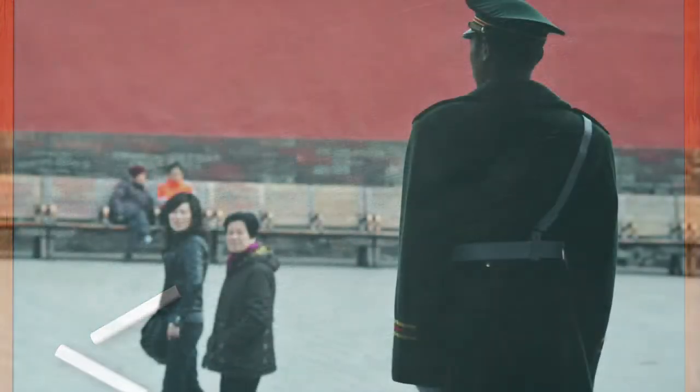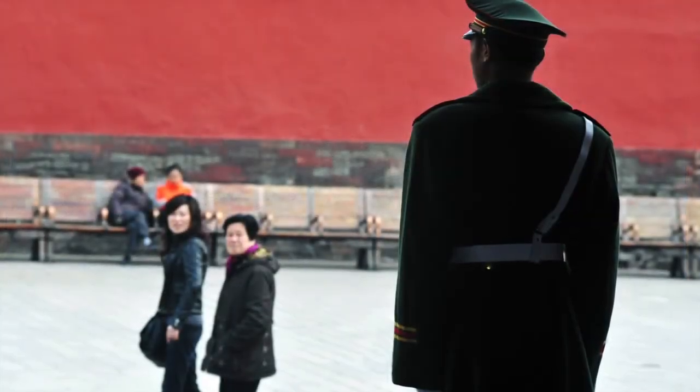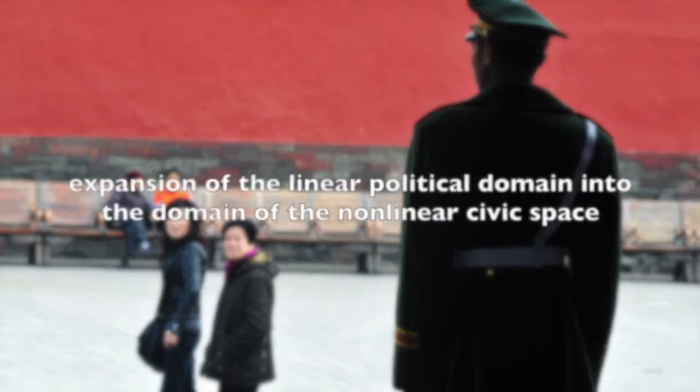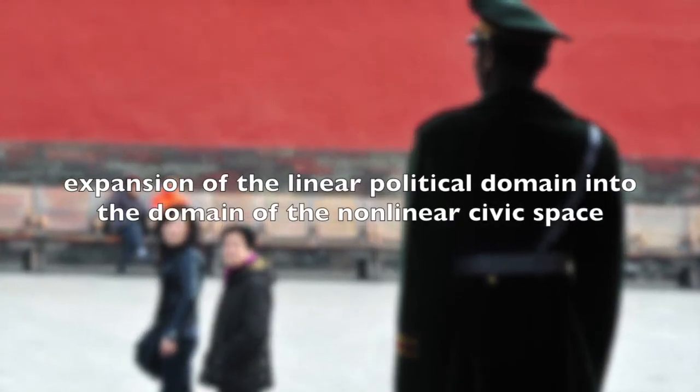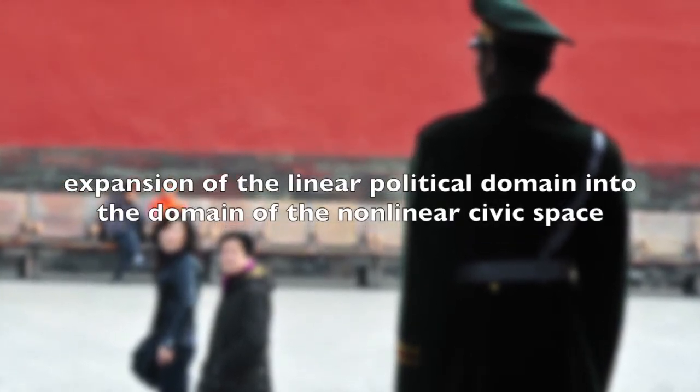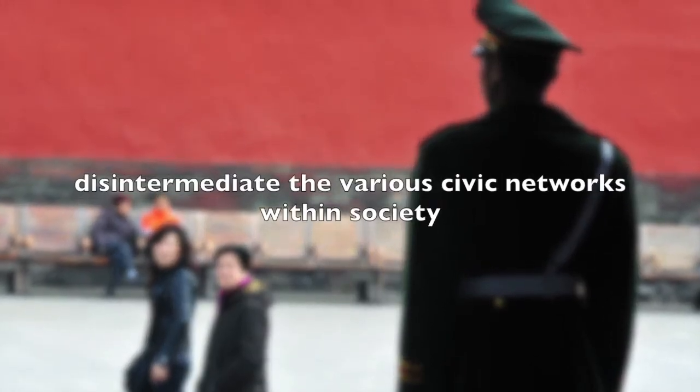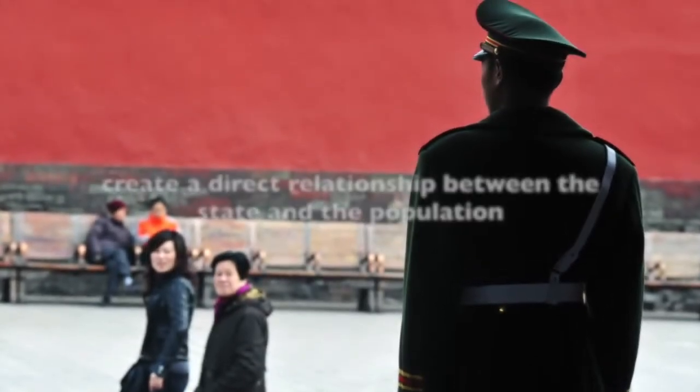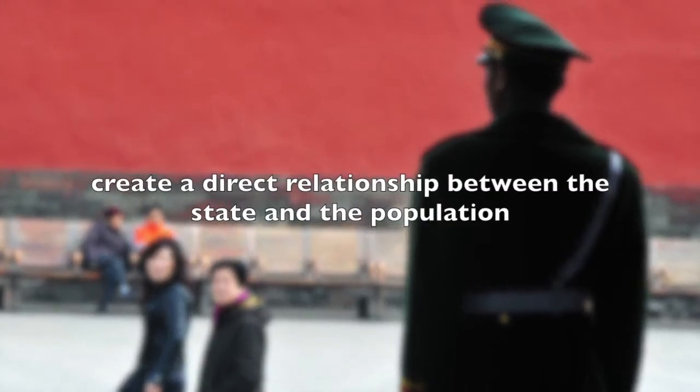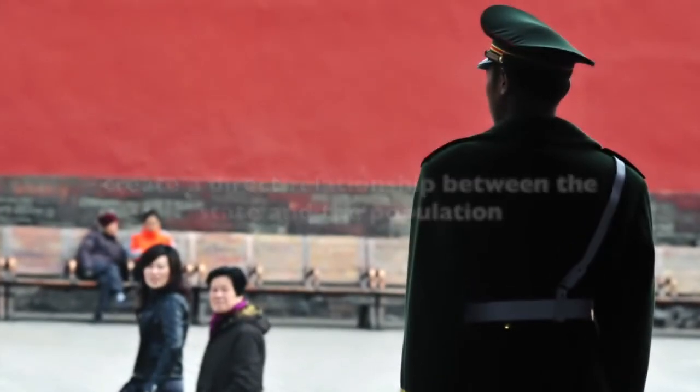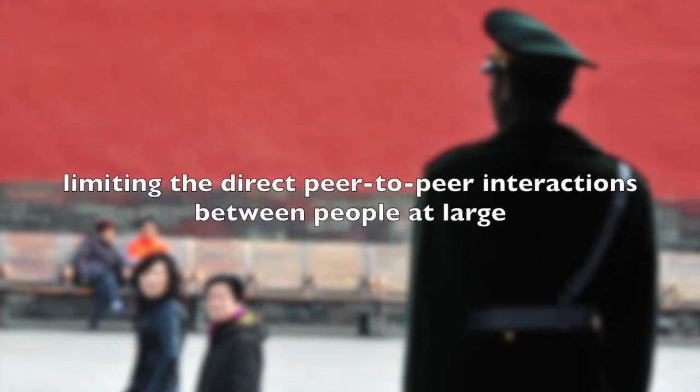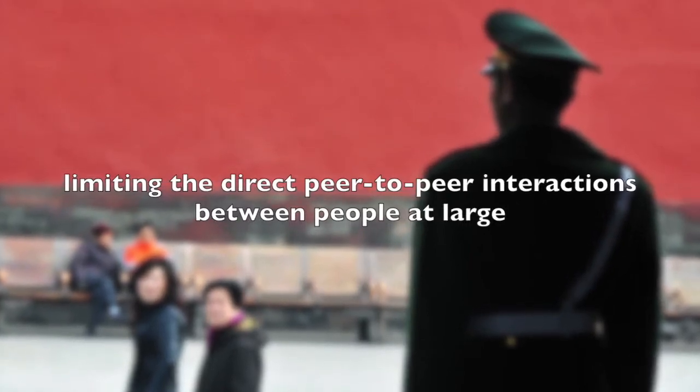In this context, we could for example identify totalitarianism as an expansion of the linear political domain into the domain of the nonlinear civic space, as it tries to disintermediate the various civil networks within society and create a direct relationship between the state and the population, while limiting the direct peer-to-peer interactions between people at large.